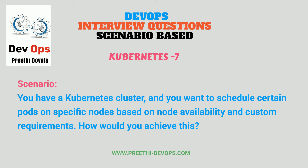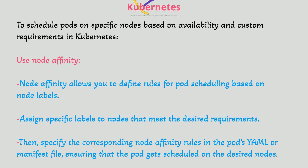Scenario: you have a Kubernetes cluster, and you want to schedule certain pods on specific nodes based on node availability and custom requirements. How would you achieve this? To schedule pods on specific nodes based on availability and custom requirements in Kubernetes: